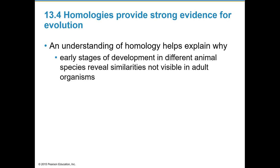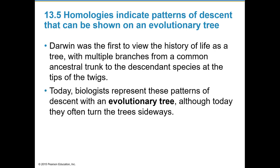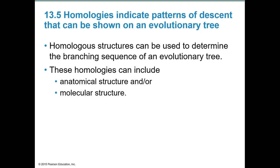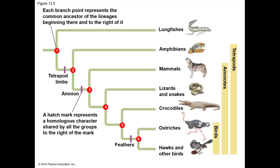An understanding of homology helps explain why early developmental stages in different animal species reveal similarities not visible in adult organisms. Darwin was the first to view the history of life as a tree with multiple branches from a common ancestral trunk to descendant species at the tips. Today biologists represent these patterns with an evolutionary tree, typically turned sideways, where each branch point represents the common ancestor of the lineage beginning there. Homologous anatomical and molecular structures are used to determine branching sequences.